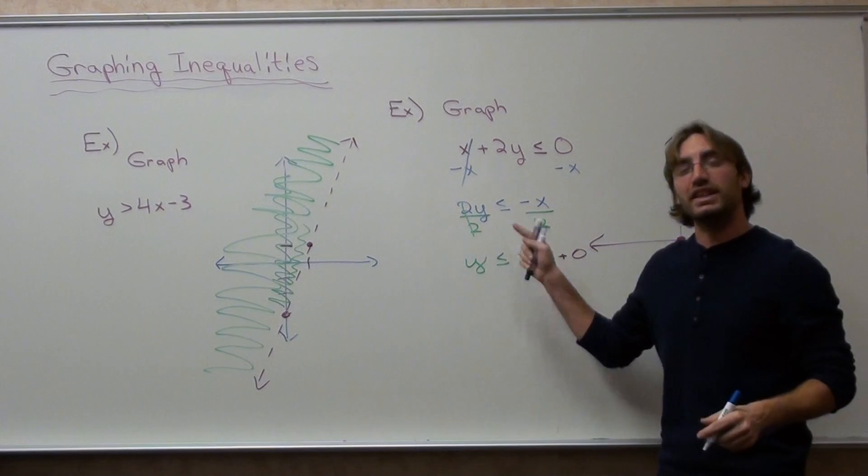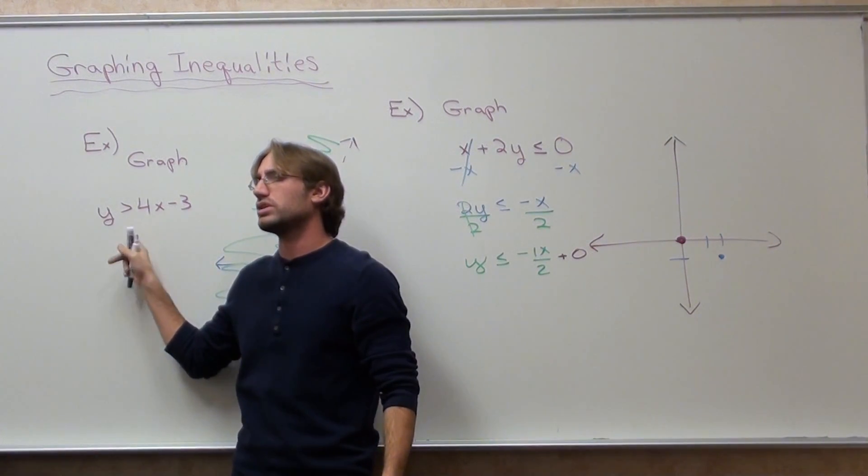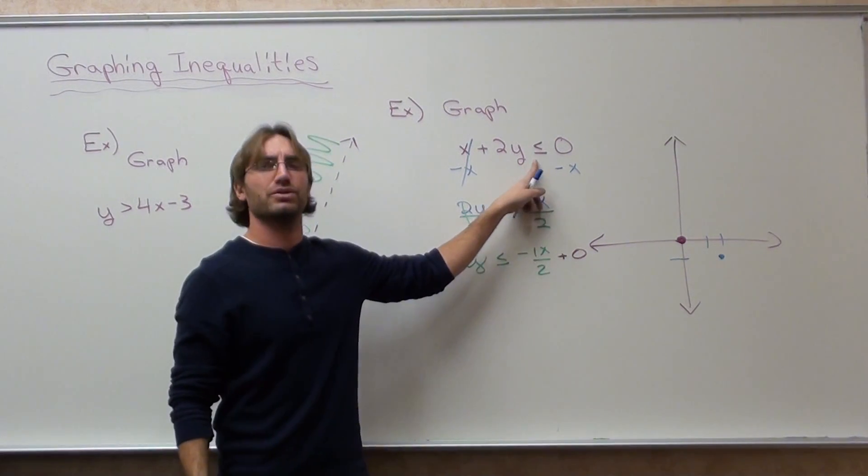It's a solid line because it has a line underneath. That's the way I used to remember it: if there's no line underneath, it means it's not solid. If there's a line underneath, it means it is solid.